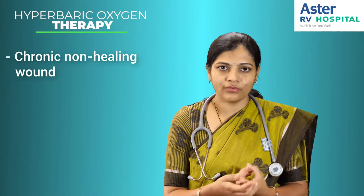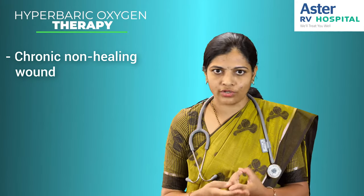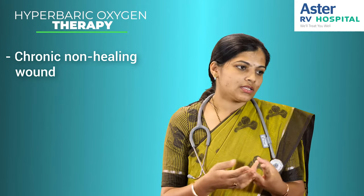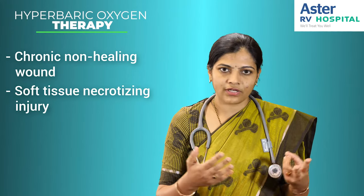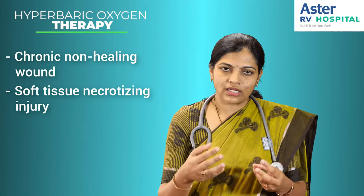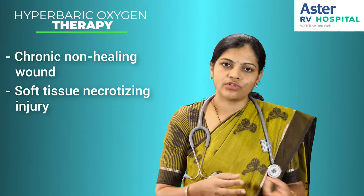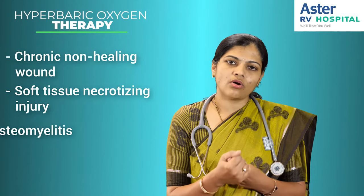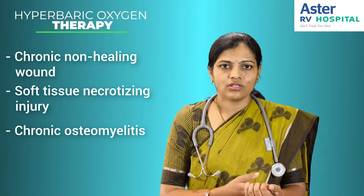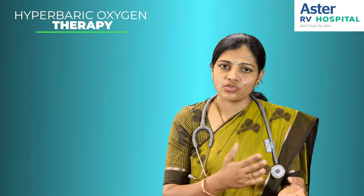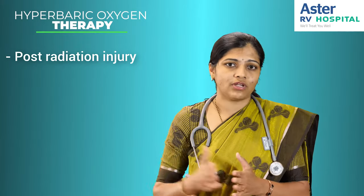To give a few examples: chronic non-healing wounds related to diabetes — what we call diabetic foot or diabetic wound — soft tissue necrotizing injuries where someone suffers a fracture or open wound and infection spreads, gas gangrene, soft tissue infection, and chronic osteomyelitis where the infection has reached the bone and is not healing at all.